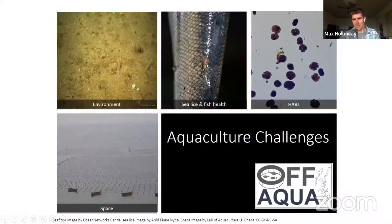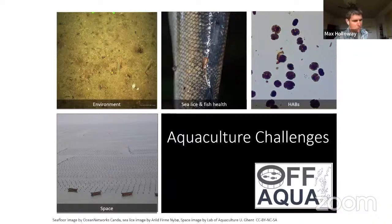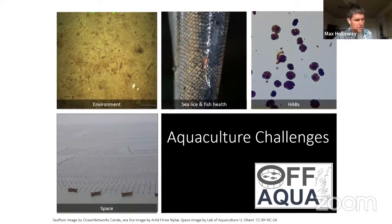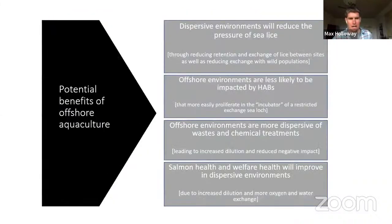Agriculture as a sector has a number of challenges. One is the environment — the environmental impact on the seabed and dispersion of waste and chemicals in the water column. Secondly, there's managing fish health and sea lice. Then there's harmful algal blooms. These are all related to the issue of space — if you're cramming lots of development into a small region you're going to have a much larger environmental impact. This is why a lot of the industry are now looking towards more offshore environments where you can expand and reduce the environmental footprint in these more exposed and dispersive environments.